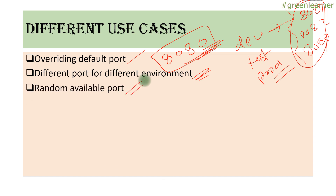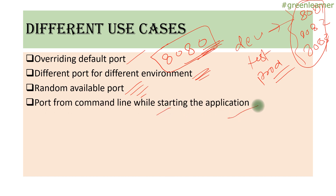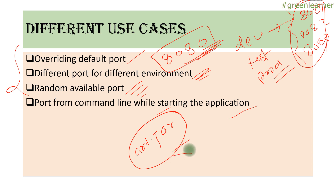Third use case: random available port. I do not want to specify a particular port — I want the system to look for any available port and start our application on that port. We are going to see how to do that. Next is specifying the port from the command line while starting the application. One way is to give the port in application.properties or application.yaml in the source code itself. Another way is to have the Spring Boot application artifact — the .jar — and while starting it from the command line, you specify the port. We are going to see that also.